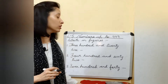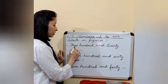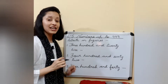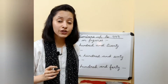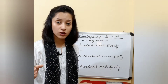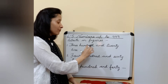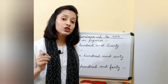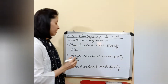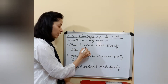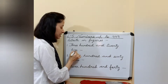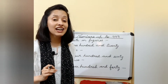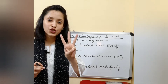Pay attention on the board. What is written over here? 326. It means the number is given to us in the form of words. We have to convert this and write in figures. By 300, you understand that it is a three-digit number.